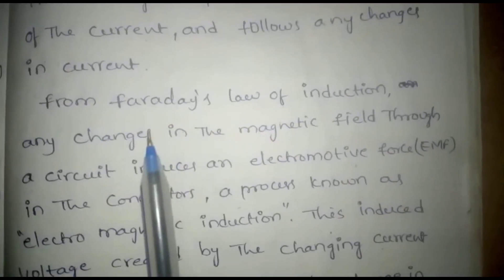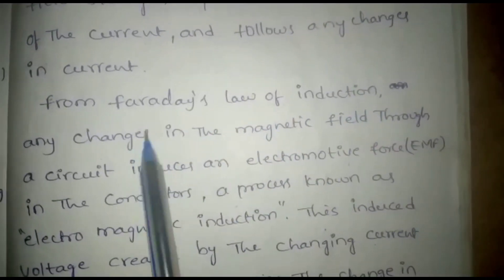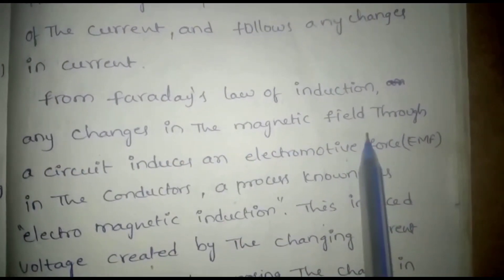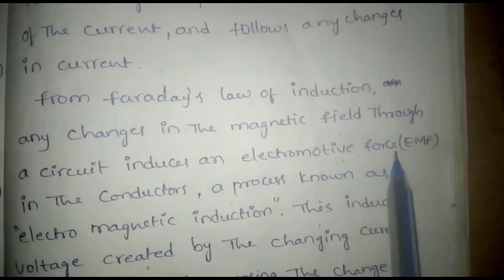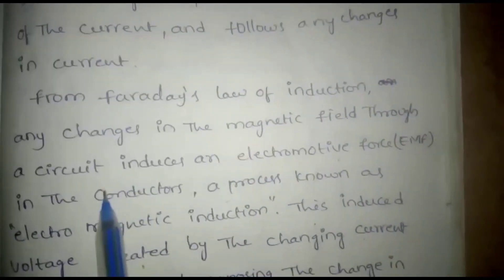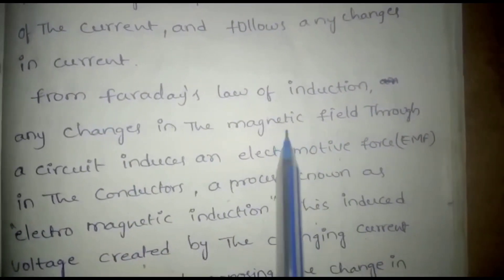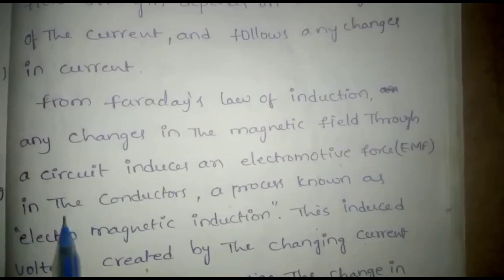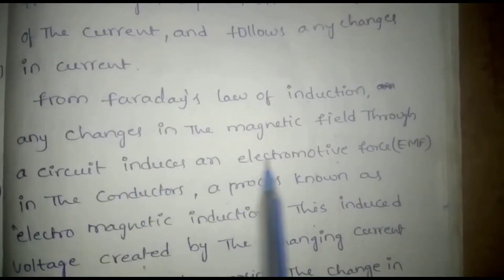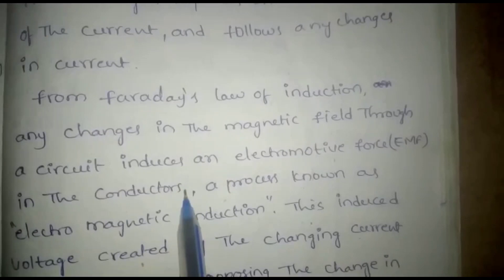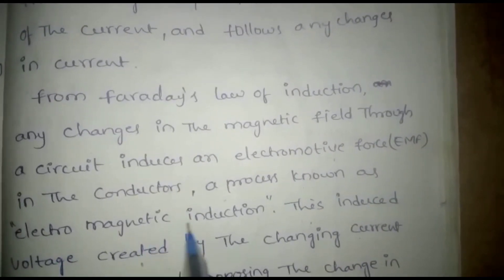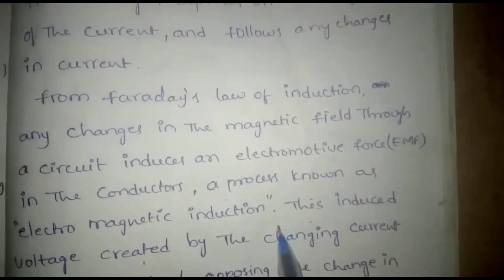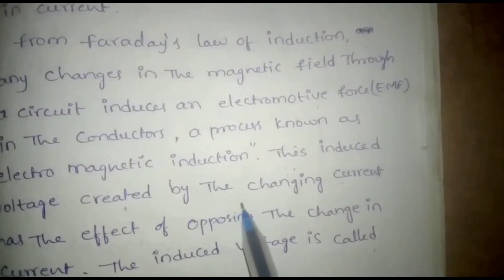Any changes in the magnetic field through a circuit induce an electromotive force. If we change the magnetic field in the circuit, it induces an electromotive force. This process is called Electromagnetic Induction. This induced voltage is created by the change in current.